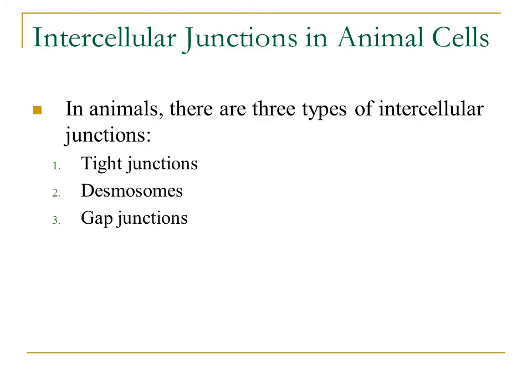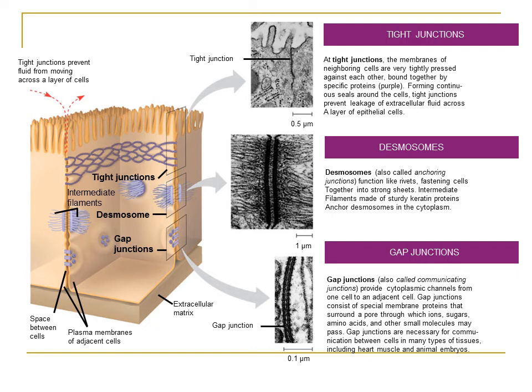There are certain types of junctions that exist in animal cells — there are three main types between adjacent cells. We'll look at pictures in just a minute to help clarify, but they are tight junctions, desmosomes, and finally gap junctions. Let's look at all of these individually and see how they allow a cell to function.